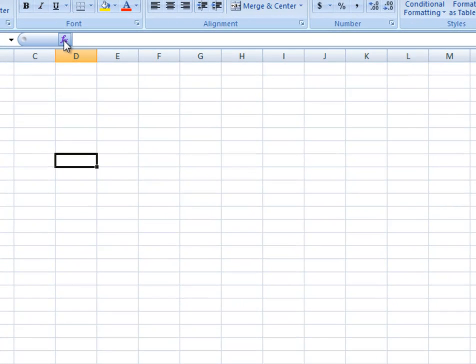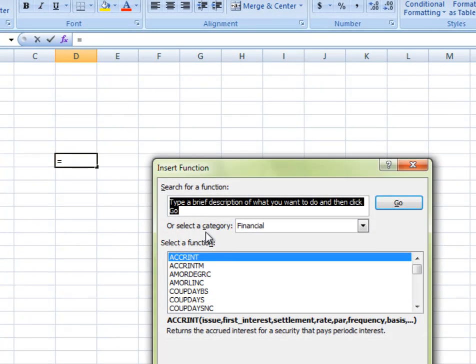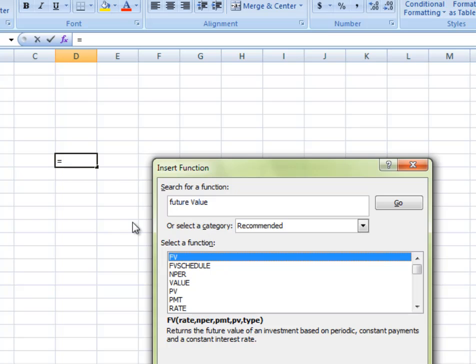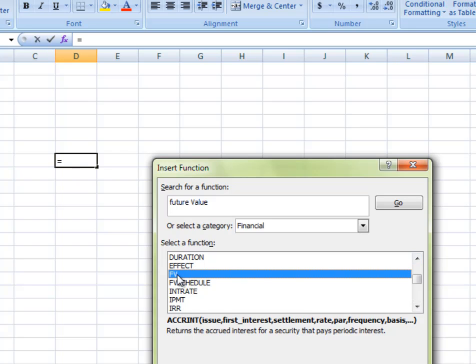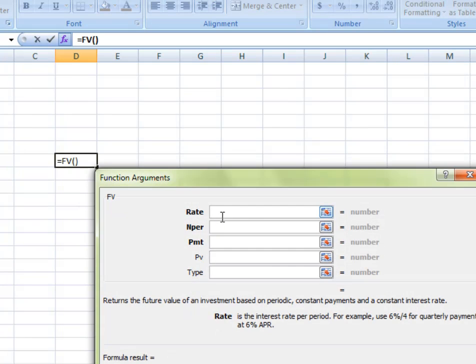We're going to go up here and find the future value. Now you can just type it in, like this, future value, and it will find it. Or we can select a category, financial, and use the future value formula. Ah, there it is, FV. We go like this, and it's going to ask us for some things. So the rate, now remember what it wants, it wants the periodic rate, so that divided by 12. And look, it calculates it for us right there. That's kind of cool. Now the number of periods, remember this happened 5 years for each month. So 12 times 5 is 60.